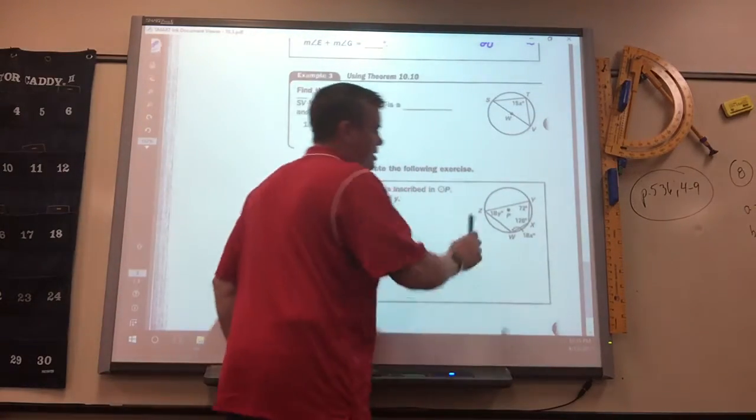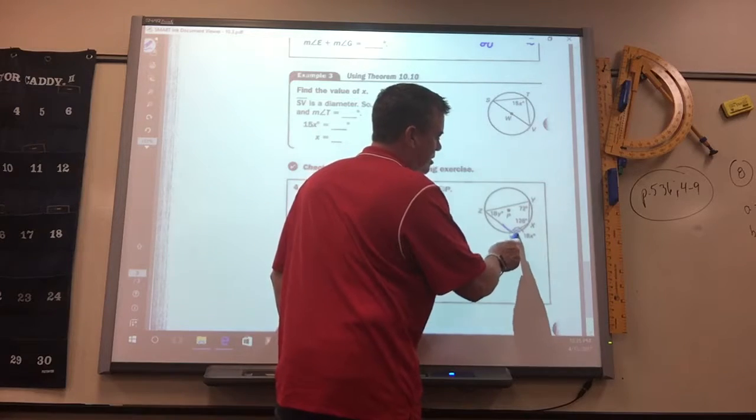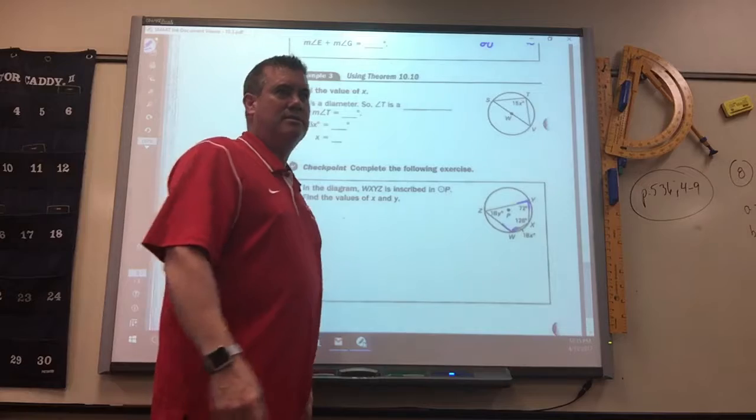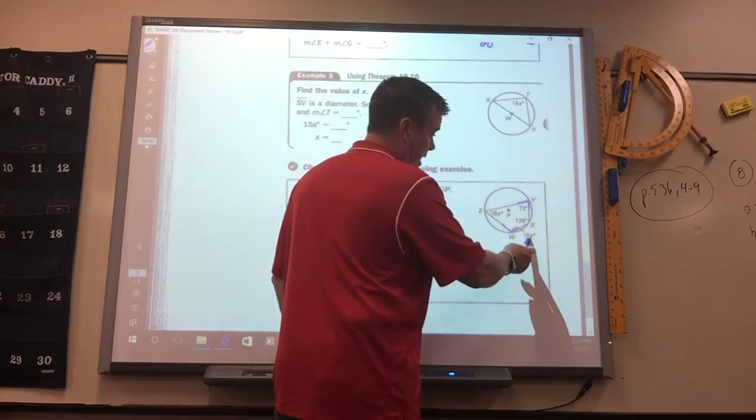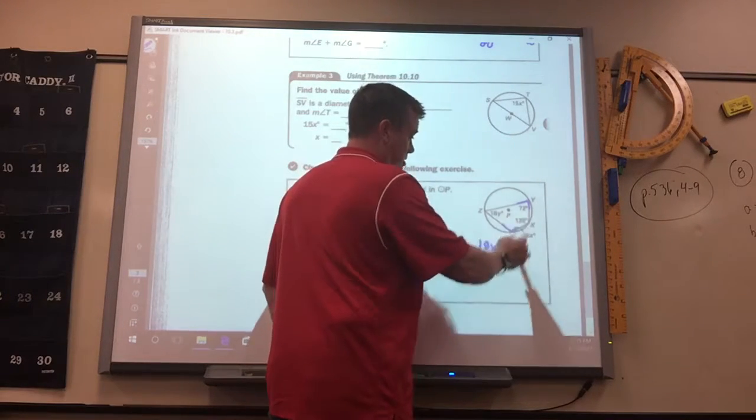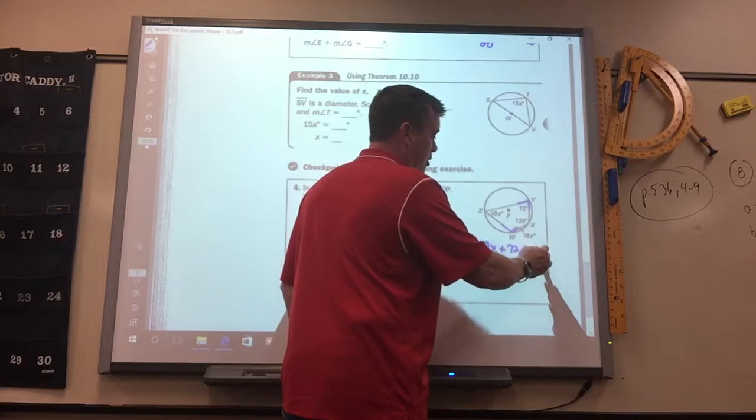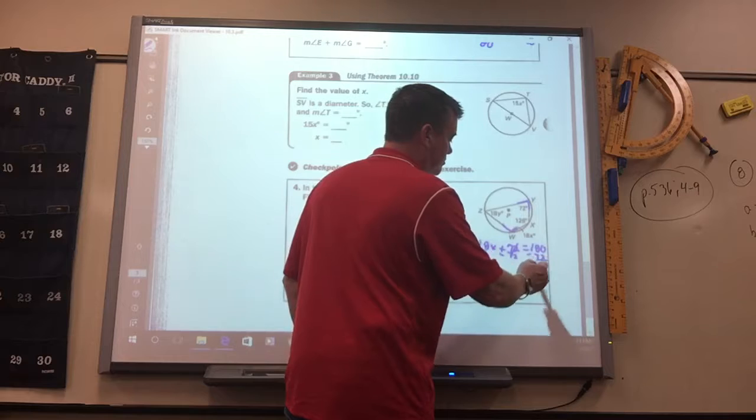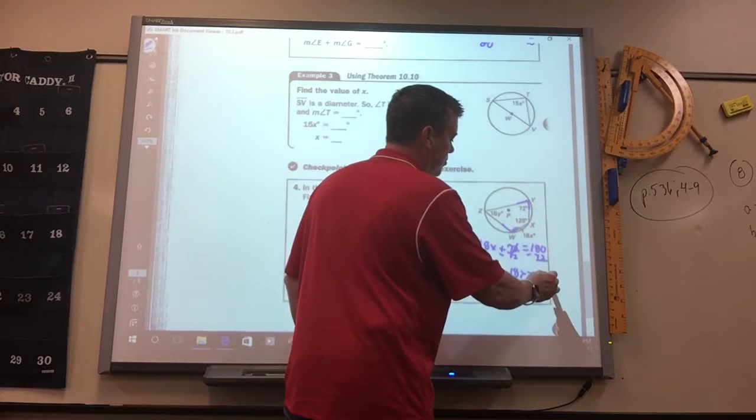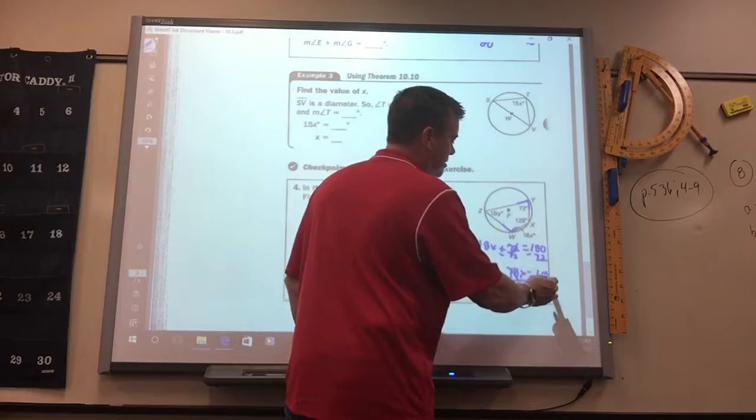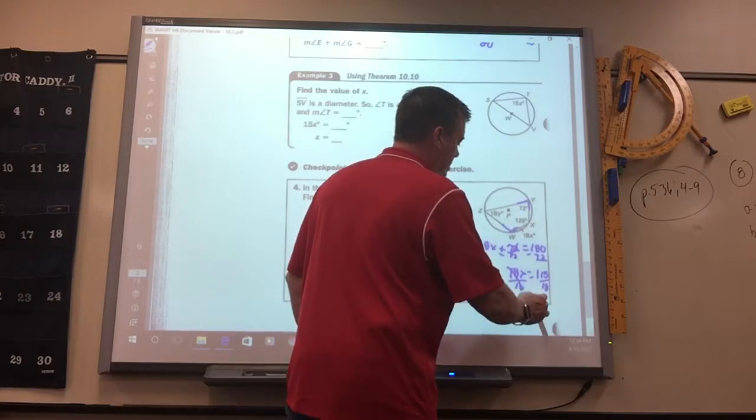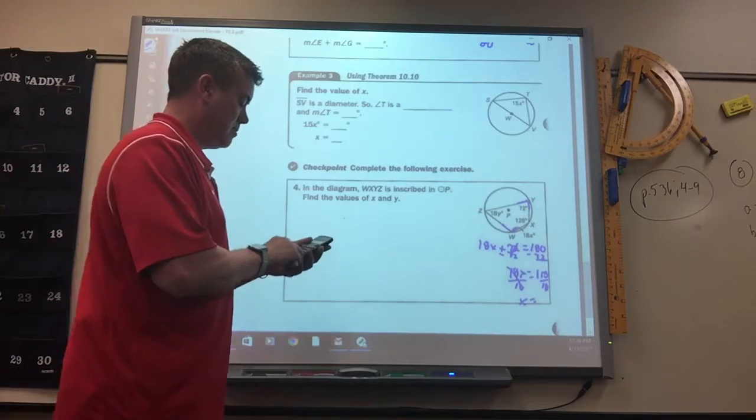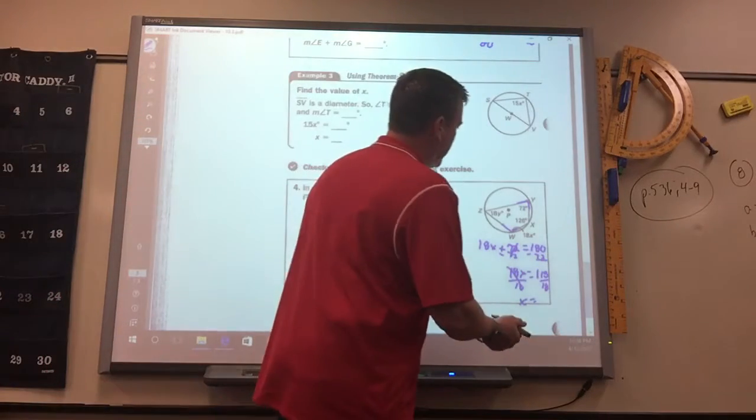So on this one, this angle and this angle have to add up to 180. So in order to figure out what X is, 18X plus 72 has to equal 180. So you subtract 72, divide by 18, and that is 6.5 repeating.